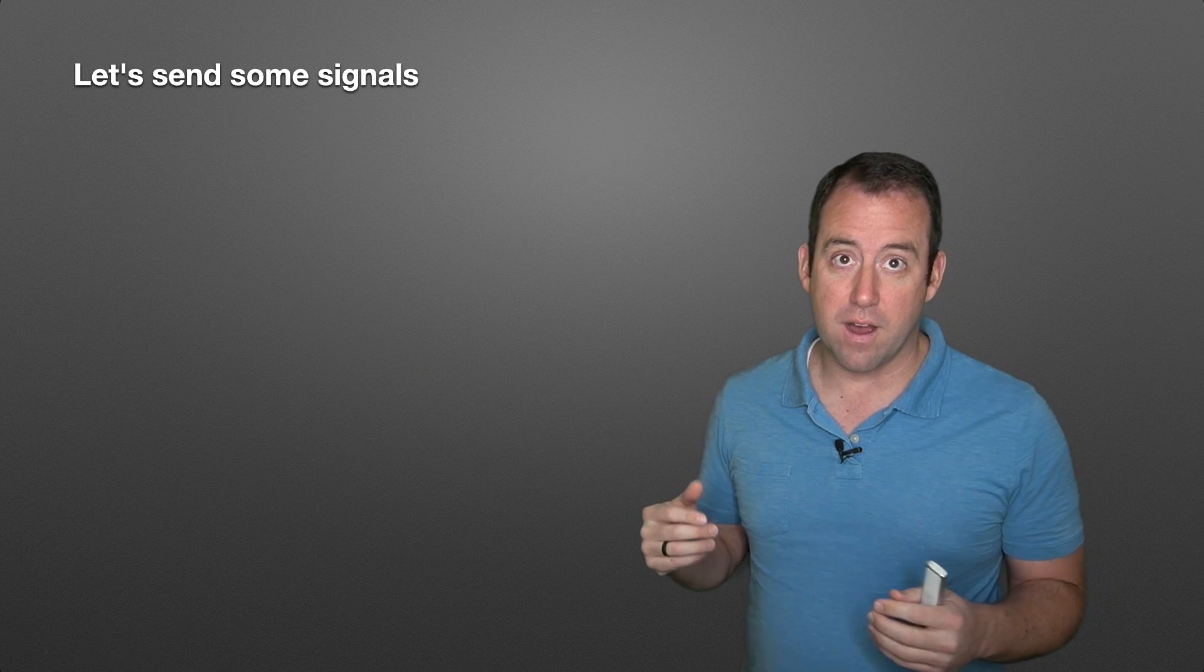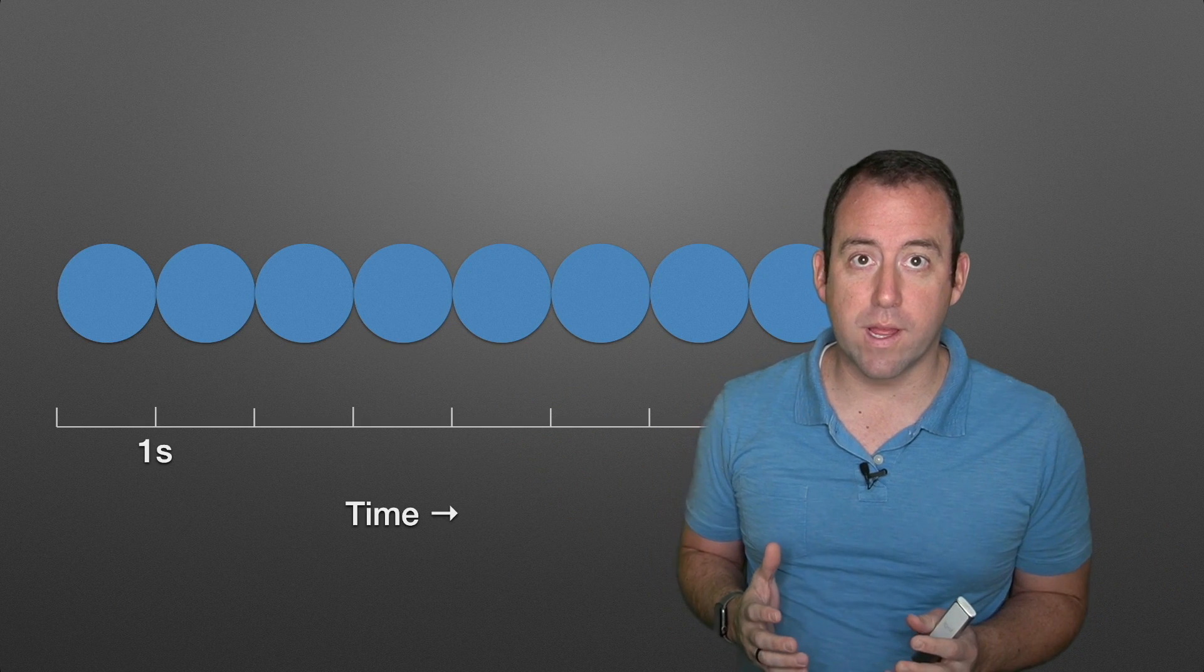Let's send some signals by flashing this light. When it's on, we're sending a one. When it's off, we're sending a zero. We're sending a binary signal. So if we flash this signal on and off, we can send yes, no, one, zero, binary signals.